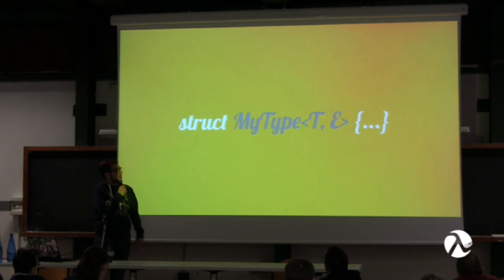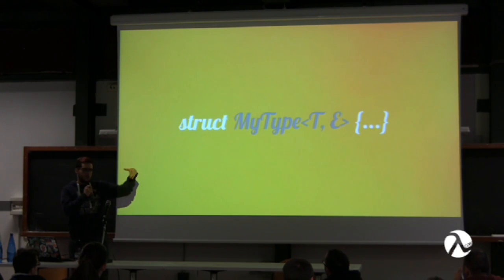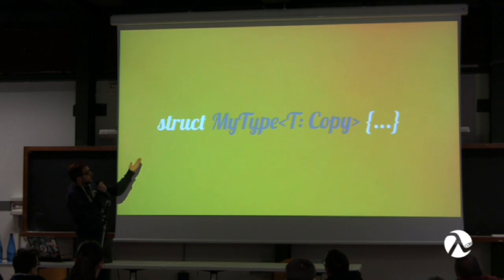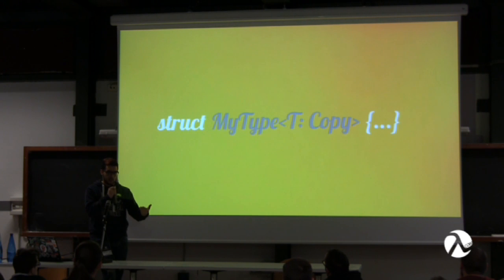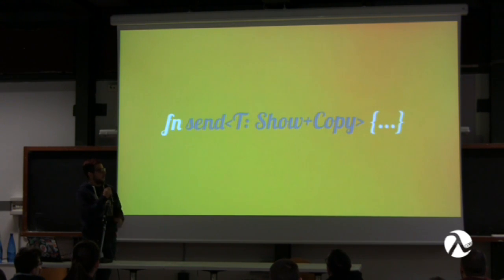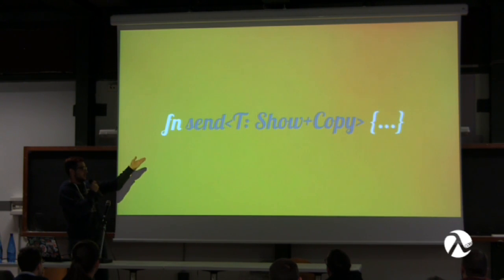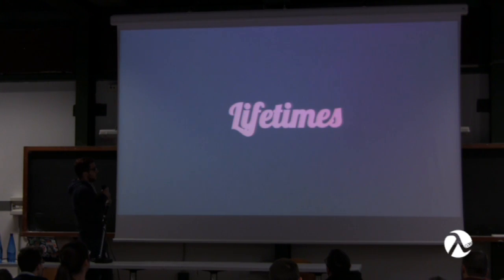Here's a simple example: struct MyType with two generics. If the struct uses the Copy bound, you're telling the compiler that the generic type must implement Copy, because you want your struct to be copyable too — you don't want anyone creating instances with non-copyable types. Similarly, a function can have generics with bounds saying the generic must implement both Show and Copy.